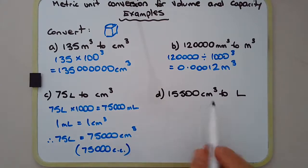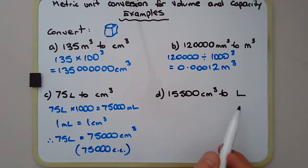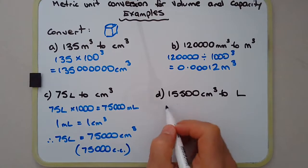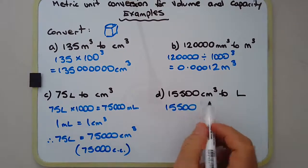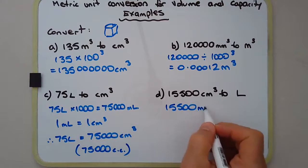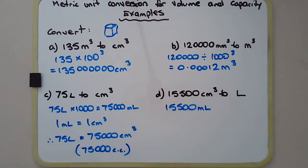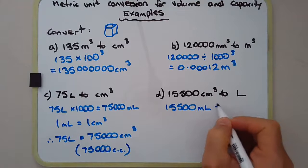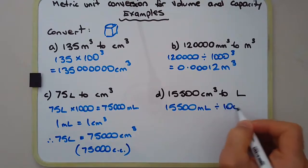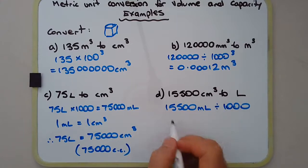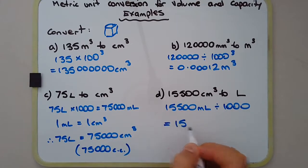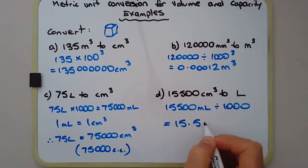Example D: Convert 15,500 cubic centimeters to liters. Since 1 cm³ = 1 mL, we can replace cubic centimeters directly with milliliters, then divide by 1,000 to get liters. That gives us 15.5 liters.